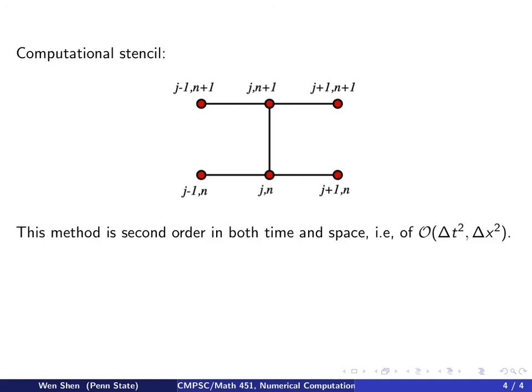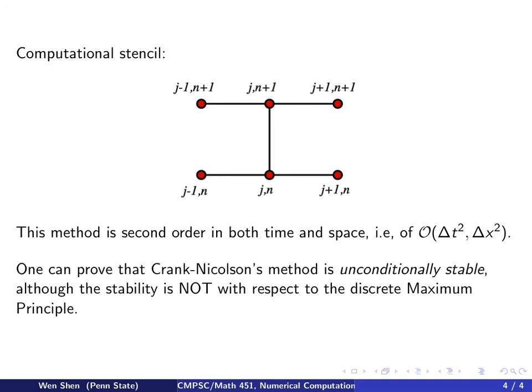As we argued before, the method is second order in both time and space, meaning your error is bounded by some constant times delta T squared plus some constant times delta X squared.